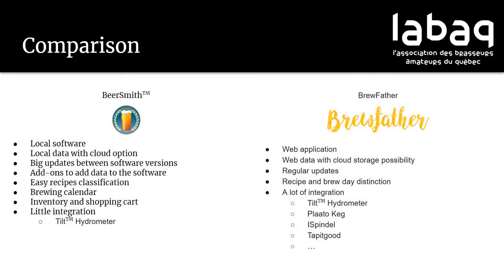The advantage of Beersmith is all your data is local on your computer. There's also an option for cloud data, so if you download the application on your phone and your data is on the cloud, you have access to all that data on both devices. Because it's a software, you have big updates between versions — there's more stuff inside Beersmith 3 than Beersmith 2.